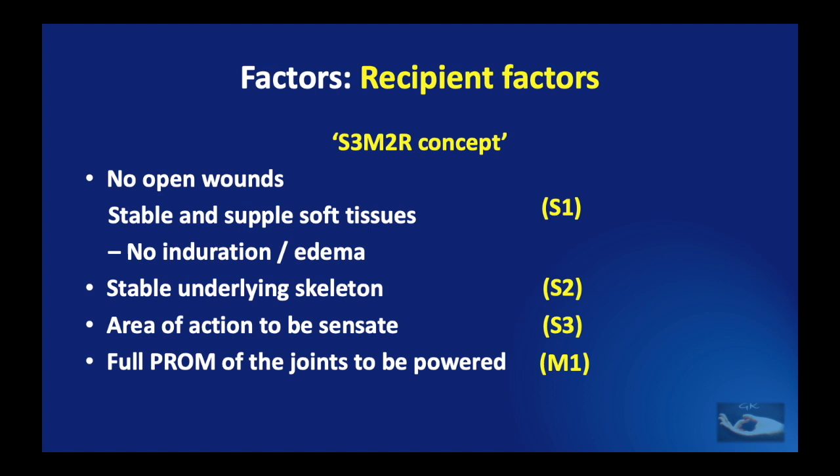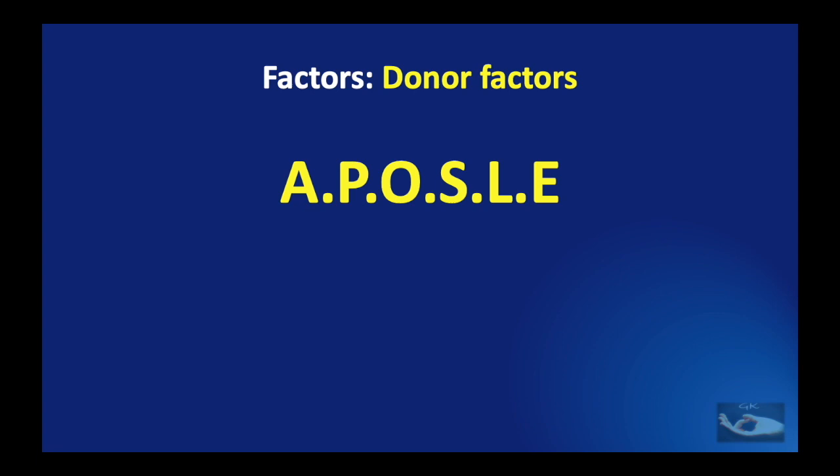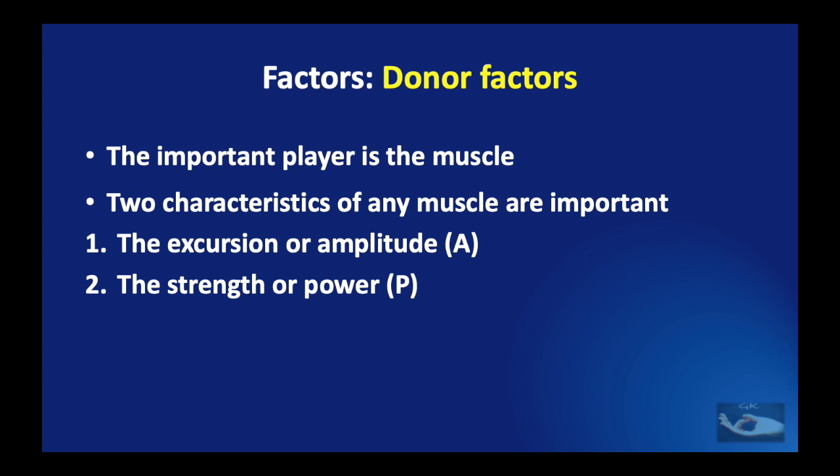We have now seen the patient factors and the recipient factors. As far as the donor factors are concerned, we shall try to remember these by the mnemonic A-P-O-S-L-E. The most important player in the donor is the muscle, and there are two characteristics of any muscle which are important: one is the excursion or the amplitude, and the second is the strength or the power. Let us consider the first donor factor — the A in the mnemonic.